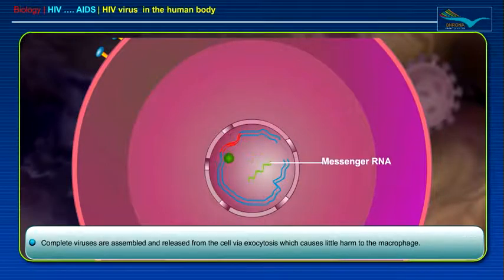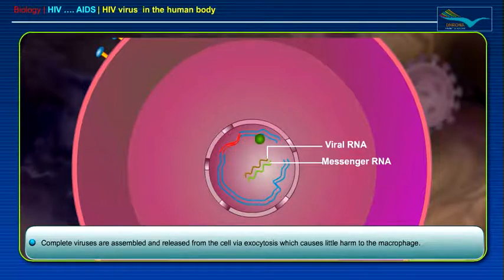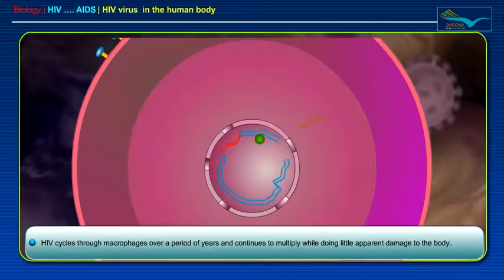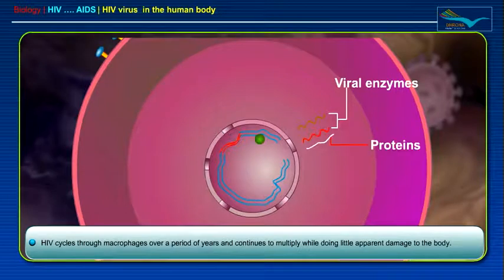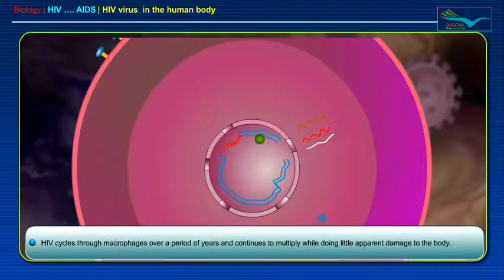Complete viruses are assembled and released from the cell via exocytosis, which causes little harm to the macrophage. HIV cycles through macrophages over a period of years and continues to multiply while doing little apparent damage to the body.